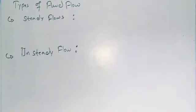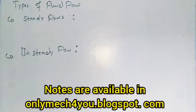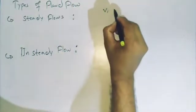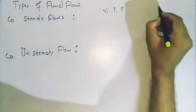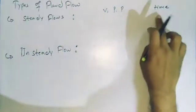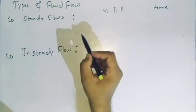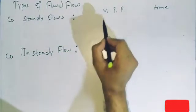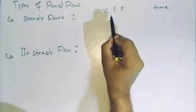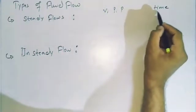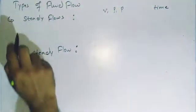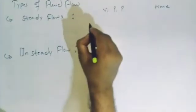The fluid flows are broadly classified into six categories: steady and unsteady flow, uniform and non-uniform flow, laminar and turbulent flow, compressible and incompressible flow, rotational and irrotational flow, and one-, two-, and three-dimensional flows. The first category is steady and unsteady flow. Steady flow is defined as the type of fluid flow in which the fluid characteristics like velocity, density, and pressure at a point do not change with respect to time.